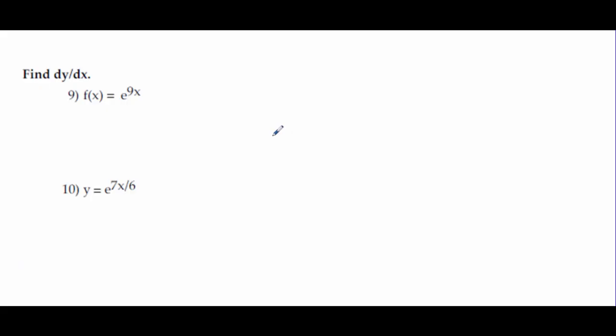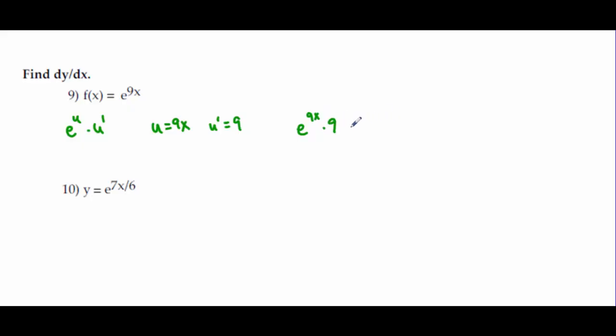Now we're doing exponential and logarithmic function derivatives. The formula for e to some power is e^u times u′. For problem 9, u = 9x and u′ = 9, so filling in: e^(9x) times 9, rewritten as 9e^(9x).